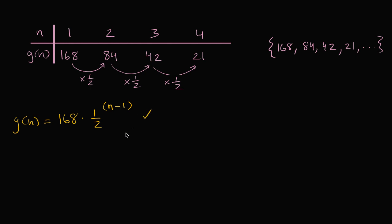So this feels like a really nice explicit definition for this geometric series. And you could think of it in other ways. You could write this as g of n is equal to, one way you could write it as 168 over two to the n minus one.